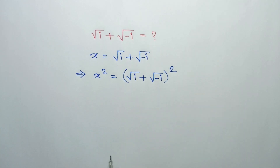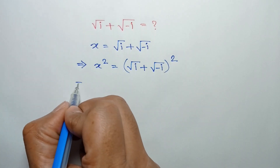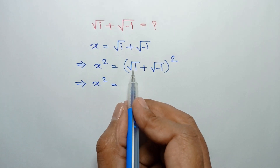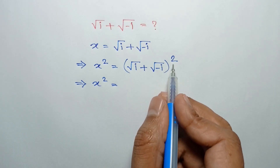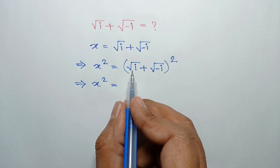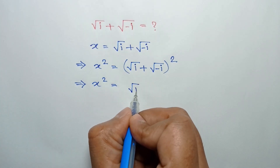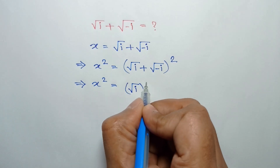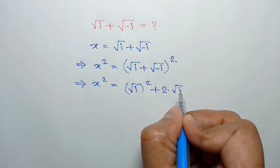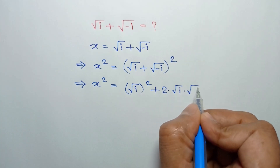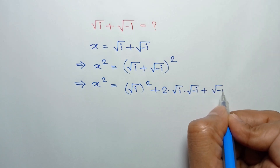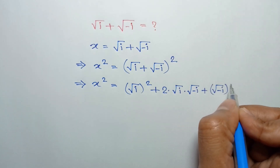Applying the formula (a + b)² = a² + 2ab + b², we can write: square root of i, whole square, plus two times square root of i times square root of negative i, plus square root of negative i, whole square.